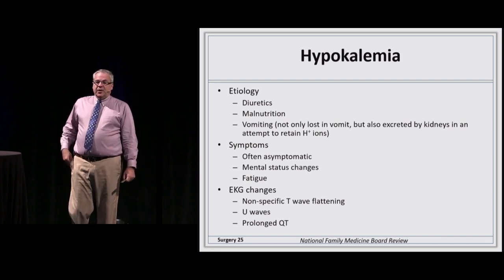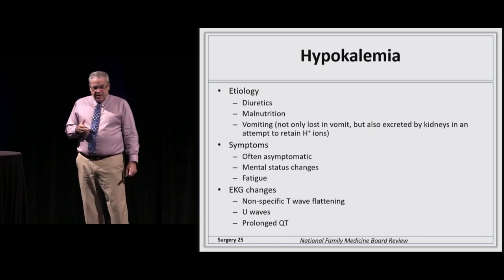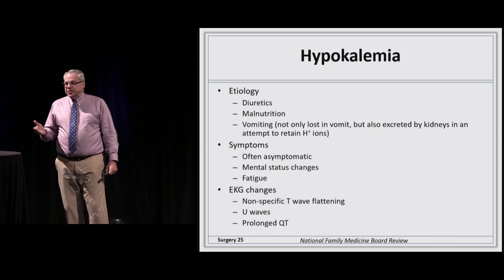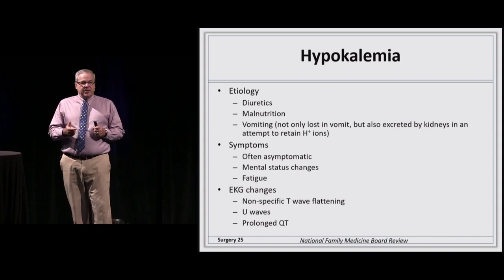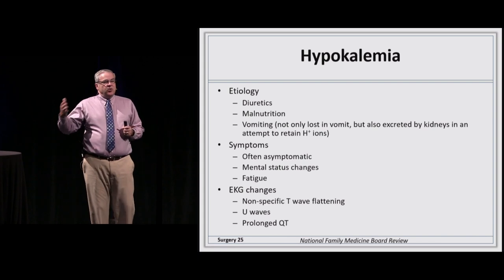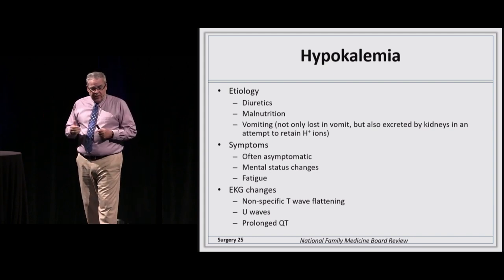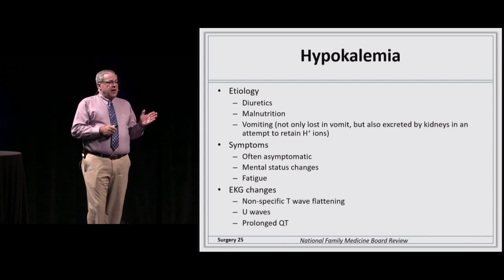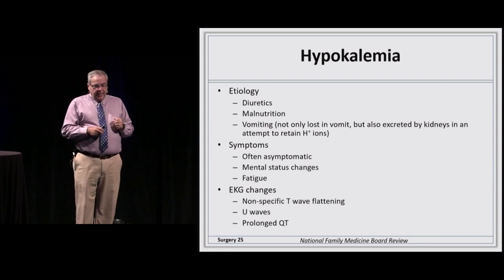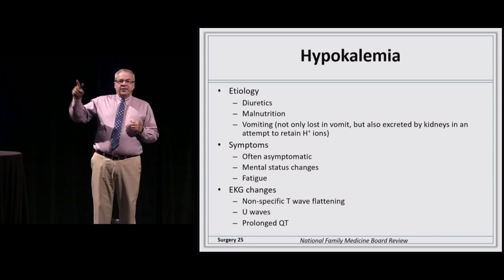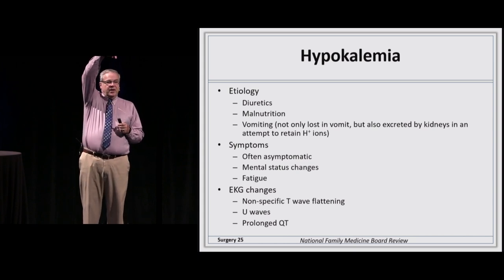Potassium is the ion that causes EKG changes. Hypokalemia is most commonly caused by diuretic use, and also seen in malnutrition and excessive vomiting — where you lose both potassium in the vomitus and hydrogen ions, causing the body to drive further potassium loss to normalize pH. Mild hypokalemia is often asymptomatic but may cause confusion and fatigue. On EKG, think of an arrow pointing down on the T wave: this flattens the T wave, which pushes out to form a U wave, and you also get a prolonged QT interval.